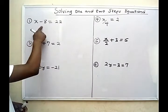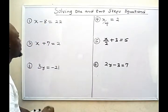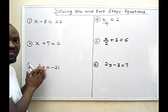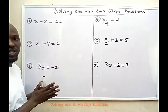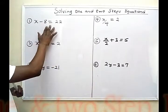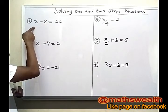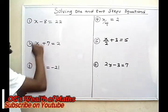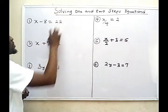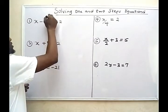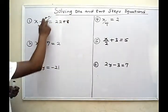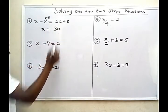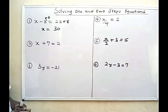The first problem: x minus 8 equals 22. I want all the variables on one side — precisely the left-hand side — and all the numbers on the right-hand side. I don't want numbers on the left-hand side, so I want this 8 to go. What I'm going to do is add 8 to both sides of the equation. Plus 8, plus 8 — then 8 minus 8 is 0, so x will now be 22 plus 8, which is 30. So the value of the unknown x is 30.